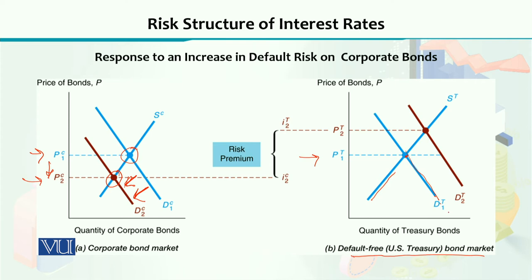As a result of this panic, investors started demanding more of the default-free US treasury bonds. Demand for treasury bonds increased, and as a result the equilibrium price increased from P1T to a higher level. We can see that this default risk increases the difference in prices. Initially, both corporate and treasury bond prices were close, but when this panic emerged, the price of corporate bonds fell while the price of treasury bonds increased.